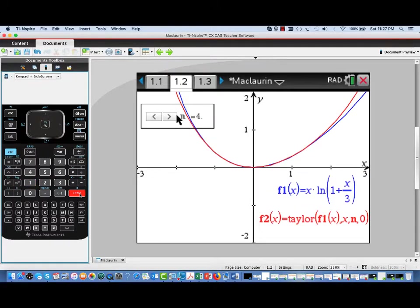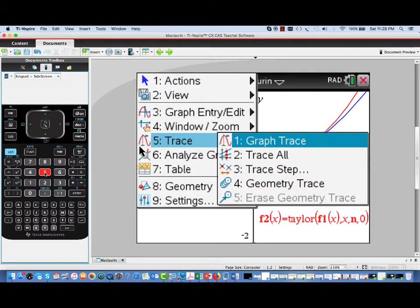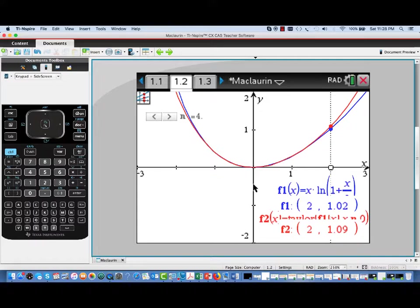And there's a little bit nicer graph. And really all I'd like to do is, since we have this nice graph here, is actually take a look at the difference in the values between the function and the Taylor polynomial at x equal 2. I'll bring up the trace. We'll do a trace all. And there we get a quick look and a comparison of the two values. F1 was our function, it has a value of approximately 1.02, and our 4th degree polynomial has a value of 1.09 at 2.